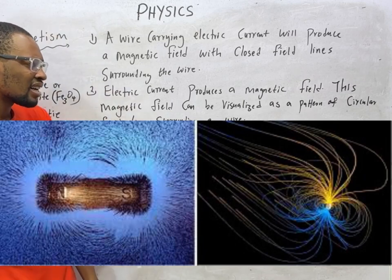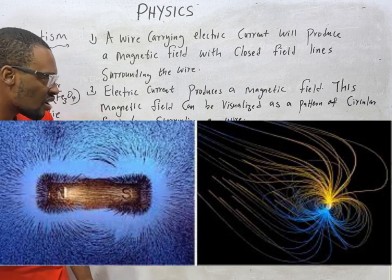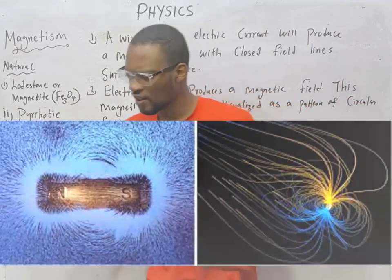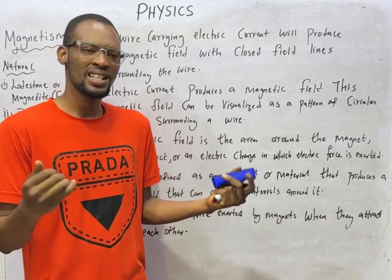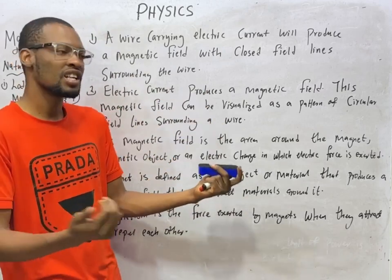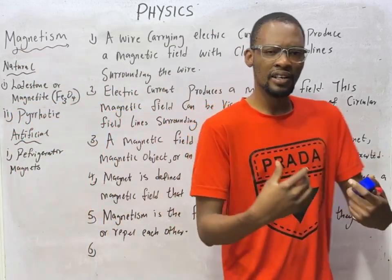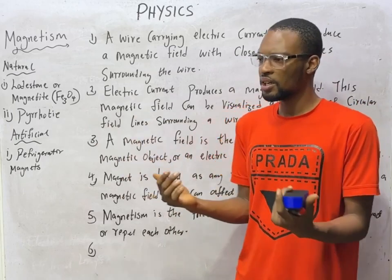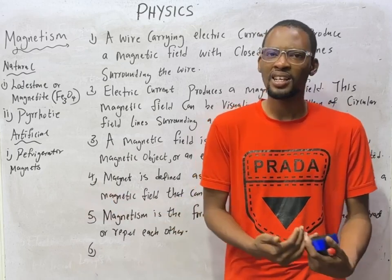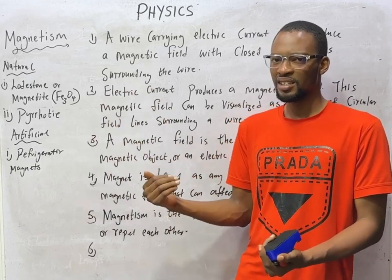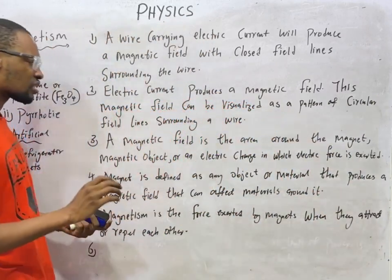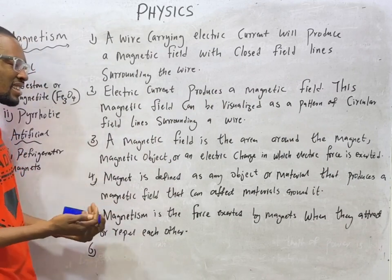A magnetic field is the area around magnets, magnetic objects, or electric charges in which magnetic force is exerted — a region where the effects of the magnet are experienced. Just like a king who has a territory where his influence is felt, a magnet's field is the region where its force is experienced.